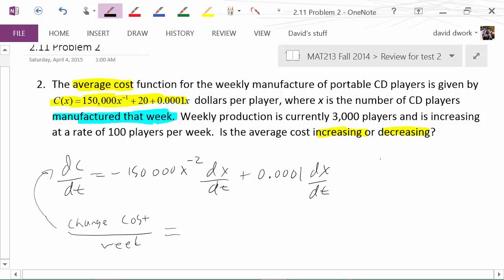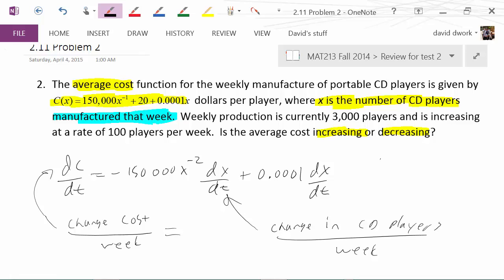The key thing we need to keep track of is dx/dt. x is defined as the number of CD players, so that would be the change in CD players per week. So we need to go hunt those things down in the word problem above.